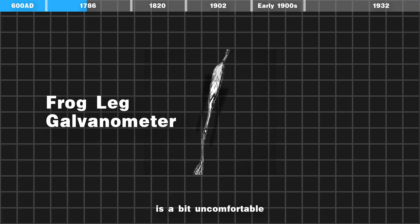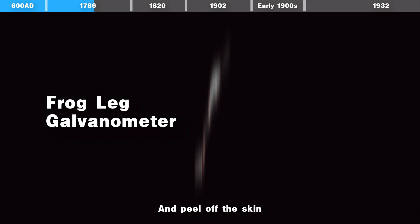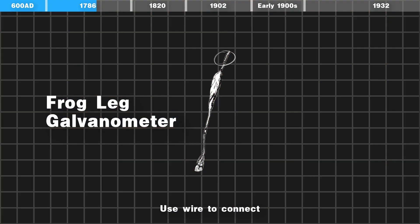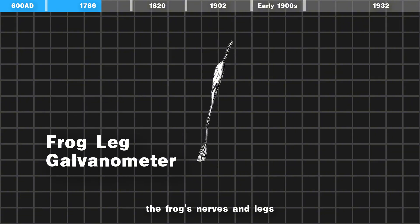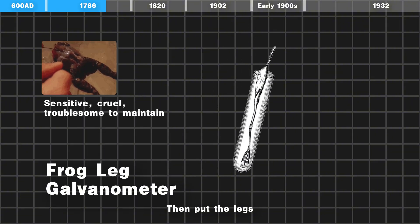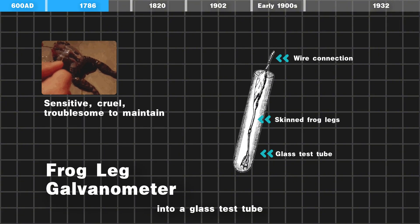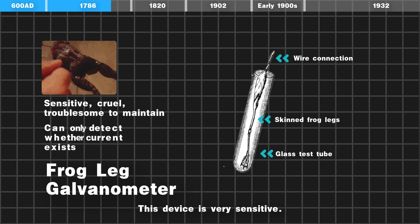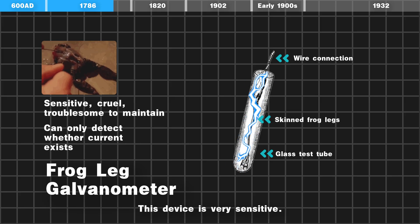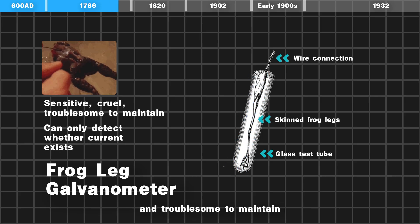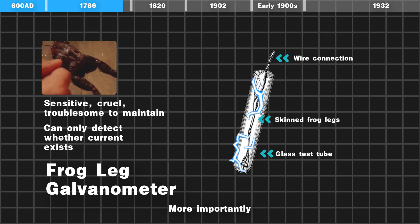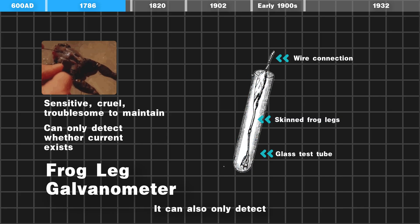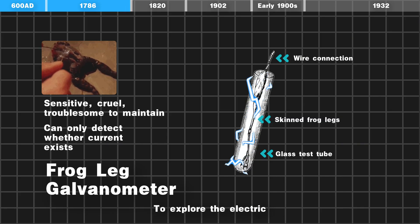The structure of this device is a bit uncomfortable. You remove the frog legs and peel off the skin, then use wire to connect the frog's nerves and legs, establishing a connection, and put the legs into a glass test tube. This device is very sensitive, but it is cruel to make and troublesome to maintain. More importantly, it can only detect the presence of current.